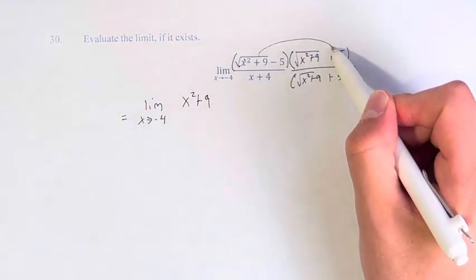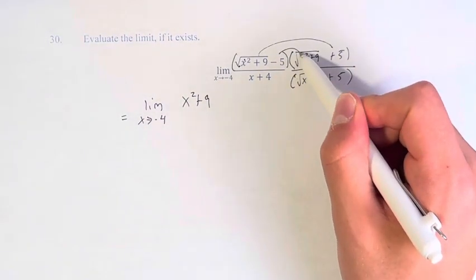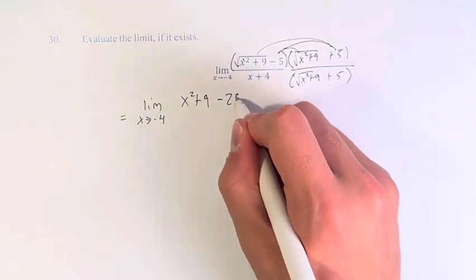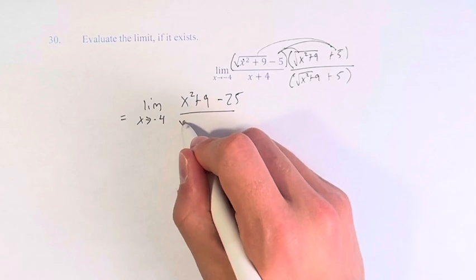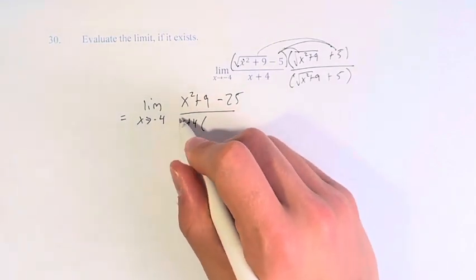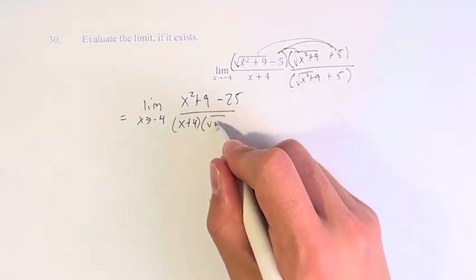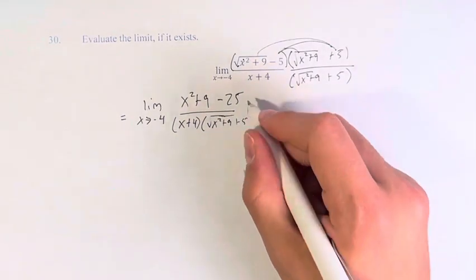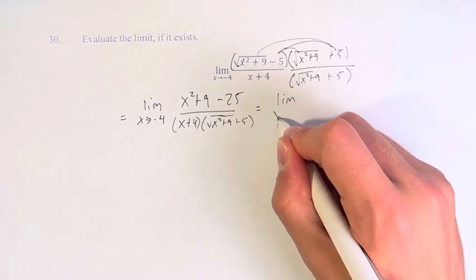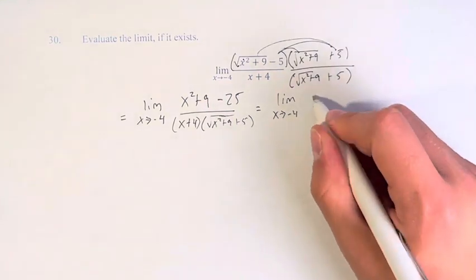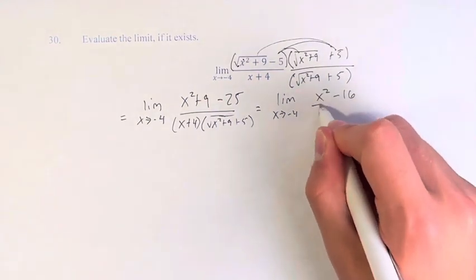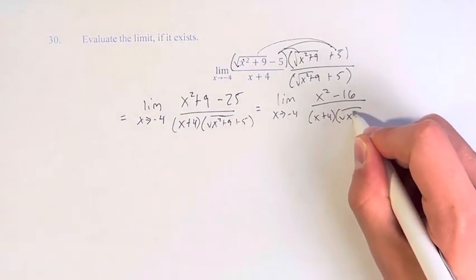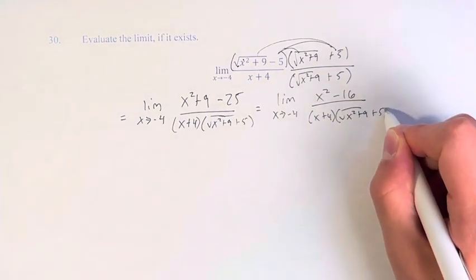The 5 times the square root of x squared plus 9 terms cancel out, and minus 5 times 5 is minus 25. This is all over x plus 4 times the square root of x squared plus 9 plus 5. Therefore, we have x squared minus 16 over x plus 4 times the square root of x squared plus 9 plus 5.